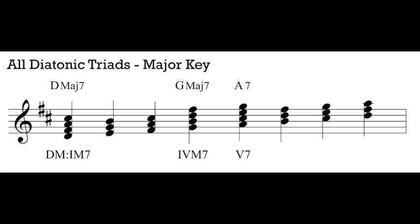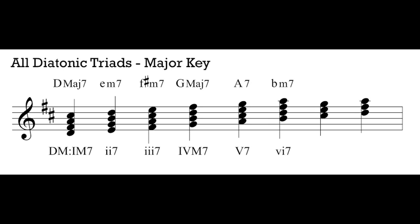Let's look at our minor triads. We have three different minor triads in the major key: the two triad, the three triad, and the six triad. When we add a seventh to each of these triads, all of our minor triads become minor seventh chords — they all have a minor seventh above. So we have the ii7, iii7, and vi7, all as minor seventh chords. The lowercase numeral is kept, with a seven added to indicate the seventh chord.